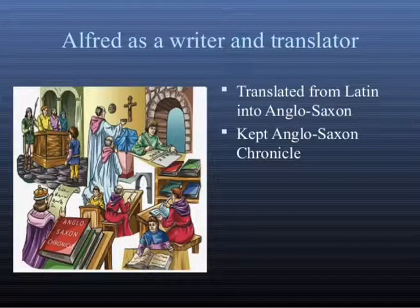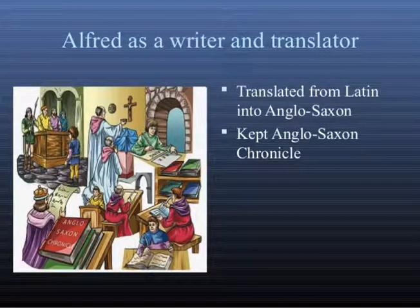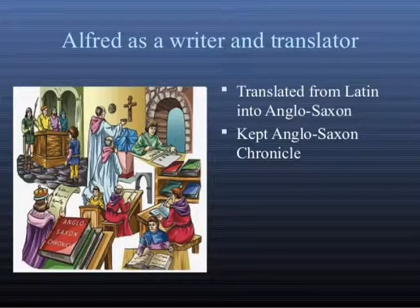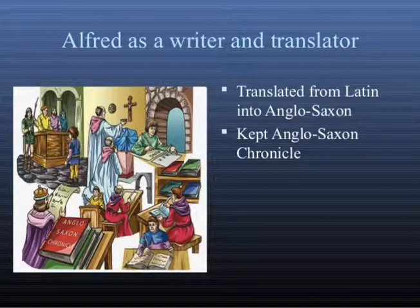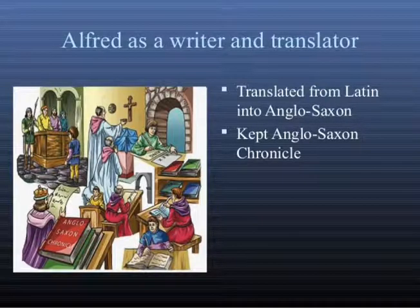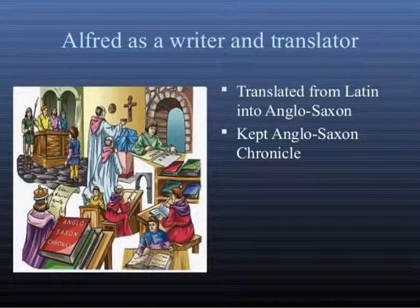On October 26, 899, Alfred died from unknown causes, most probably related to poor health experienced early in his life. Alfred left behind an extraordinary legacy, reforming the traditions and structure of early English society, maintaining peace in uncertain times, and introducing structure, judicial process, and education which left a considerable cultural impact on the generations that followed.